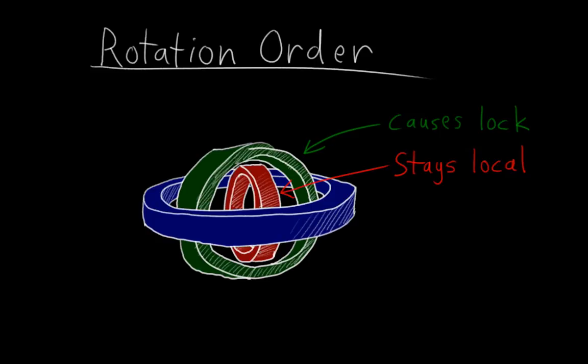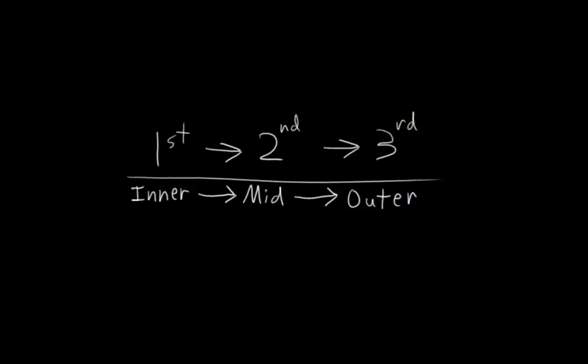Also, remember that I mentioned that the innermost ring stays aligned with the local axes of the object? Well, that means that if there's an axis that would be particularly convenient to stay aligned with the object's local space, you should probably make that the first axis. And similarly, if there's an axis that would be good to stay world aligned, make it the last axis. Just remember that the first axis is like the innermost ring, and the last axis is like the outermost ring.